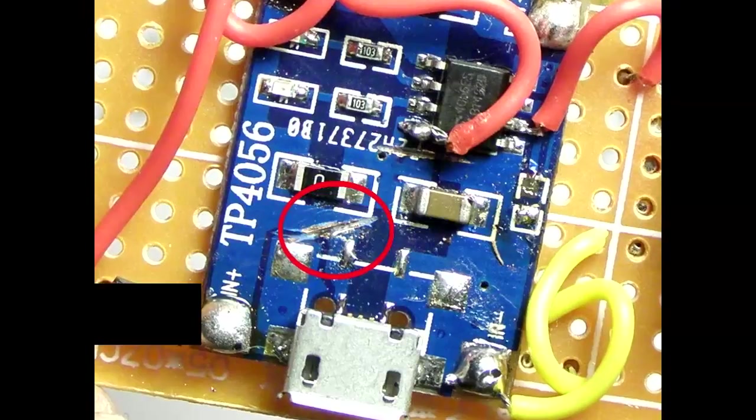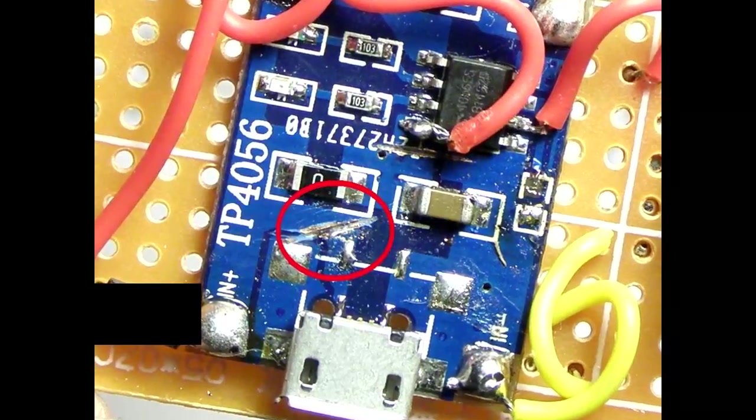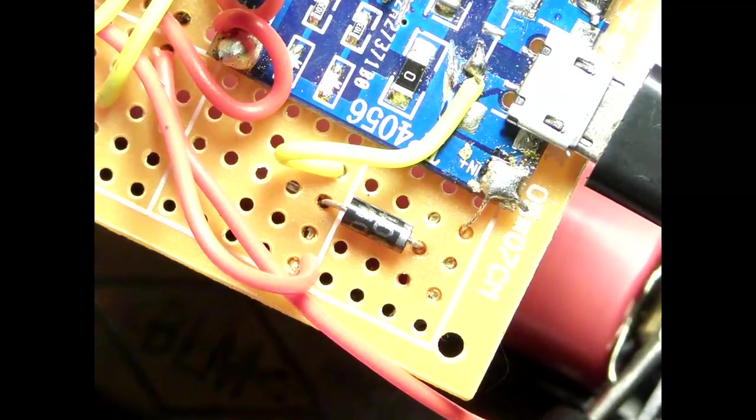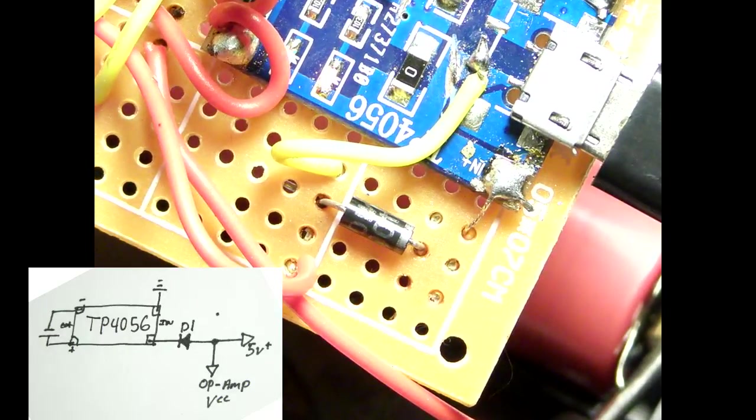I cut the trace of the V plus on the micro USB, ran a jumper wire to the PCB and then placed a diode to help stabilize the voltage supply of the LM358.